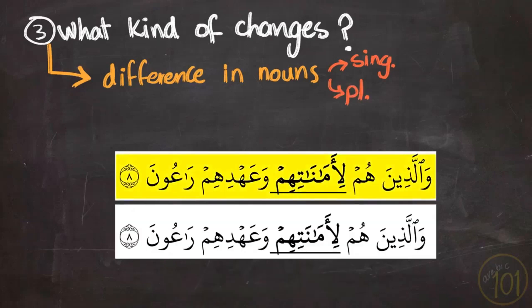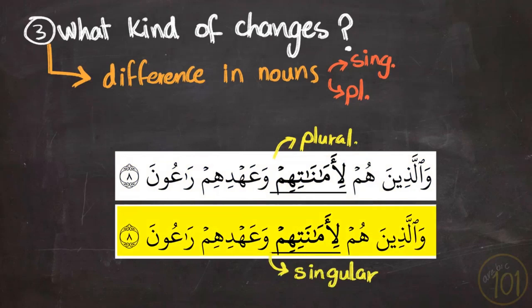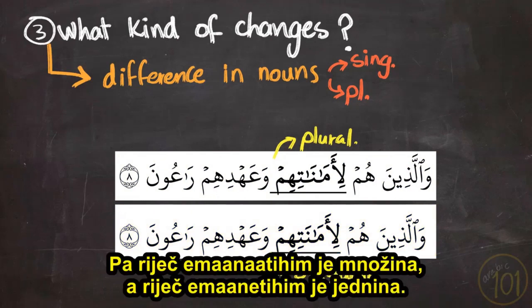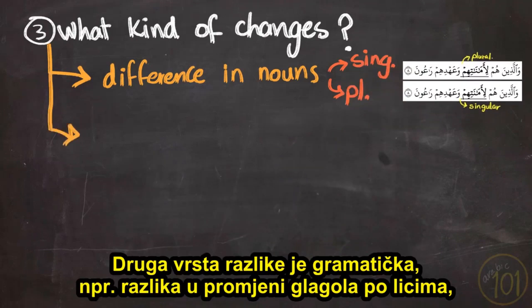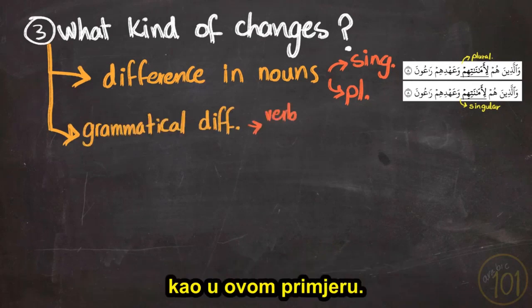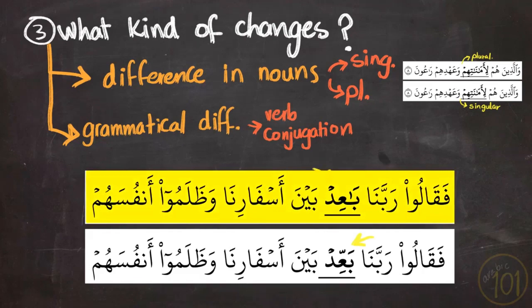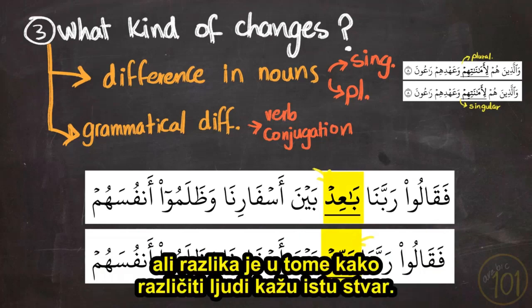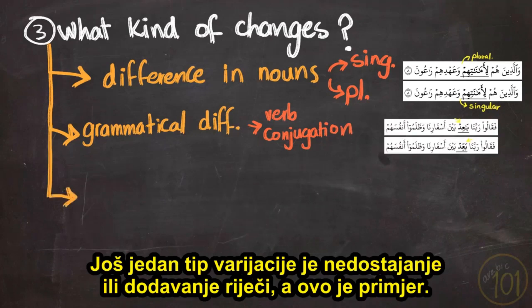For example, the word 'amanatihim' in the plural form versus 'amanatih' in the singular form. Another type of difference is a grammar difference, such as differences in the conjugation of verbs. Of course these two verb forms mean the same thing, but it is just how different people say the same thing.